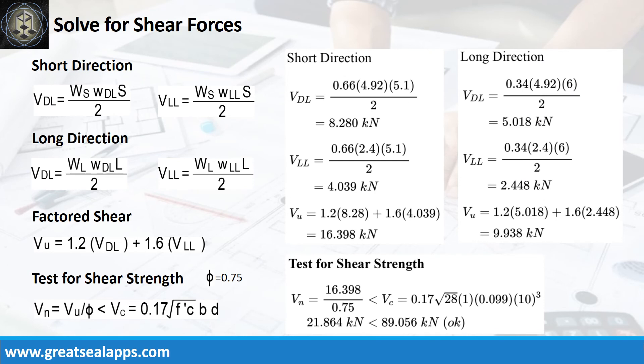At short direction, the shear force from dead load is 8.28 kN and live load is 4.039 kN, for a factored shear force of 16.398 kN. At long direction, the shear force from dead load is 5.018 kN and live load is 2.448 kN, for a factored shear force of 9.938 kN. The nominal shear force is 21.864 kN, which is less than the 89.056 kN concrete capacity.